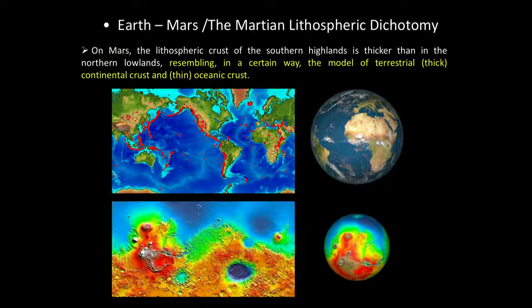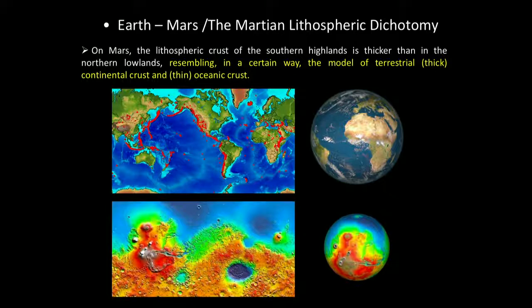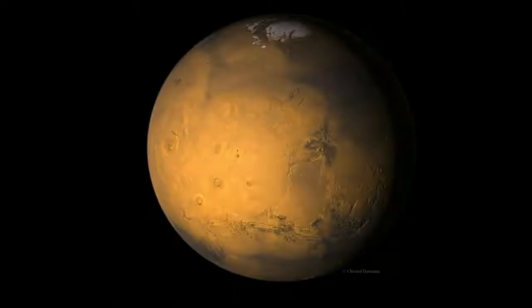Considering the general connection between Earth and Mars, we can make a comparison using the Martian lithospheric dichotomy. On Mars, the lithospheric crust of the southern highlands is thicker than in the northern lowlands, resembling in a certain way the terrestrial model of thick continental crust versus thin oceanic crust. So in a certain way, our planet as a whole could serve as a general model for this comparison.